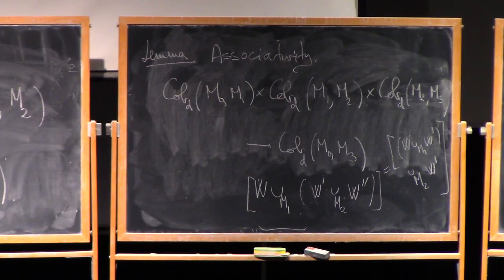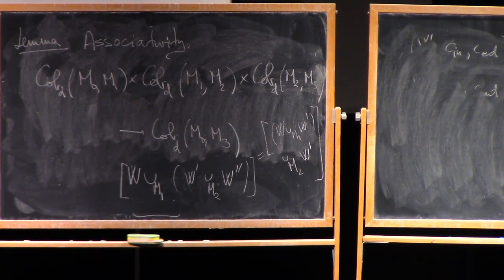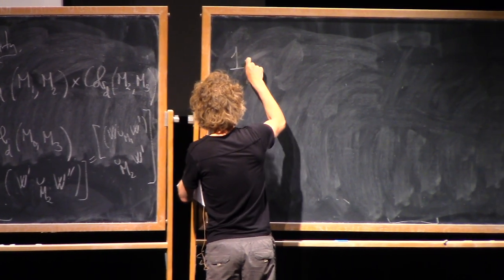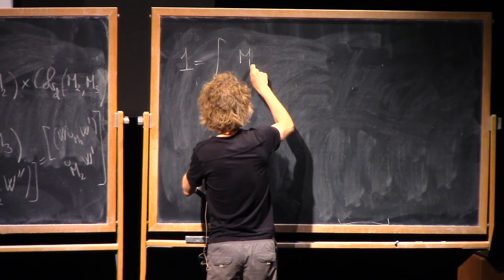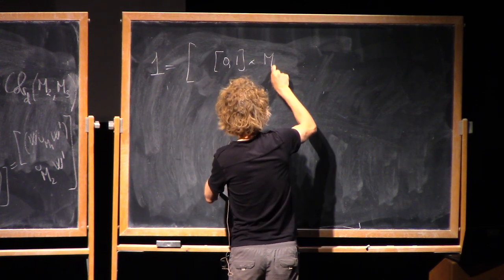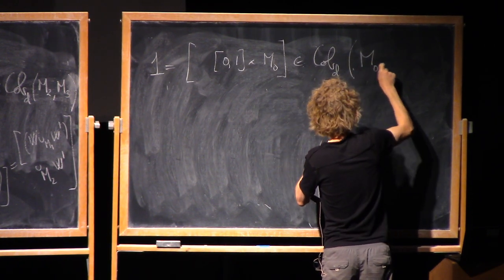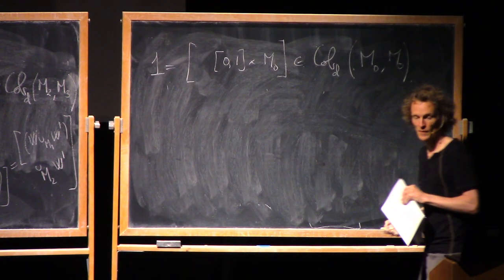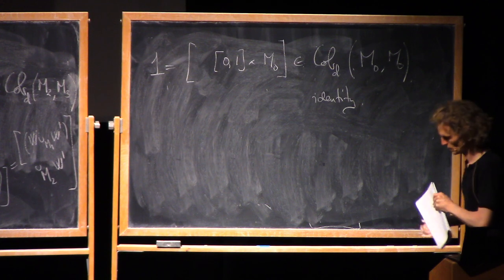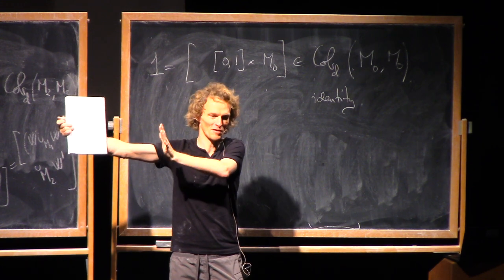The last thing is you have identities for this composition. Namely, the diffeomorphism class of, say, an interval is a cobordism that acts as an identity. If you have any cobordism and you glue an interval cross either incoming or outgoing boundary, you get something that's diffeomorphic to what you started with.